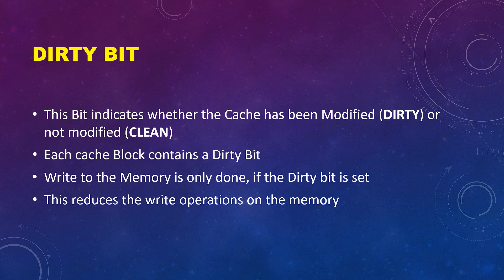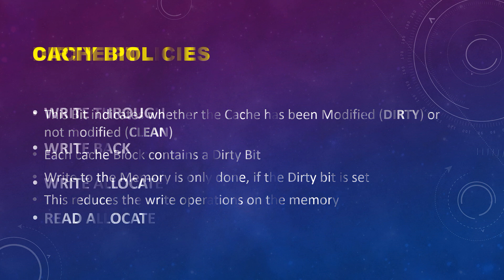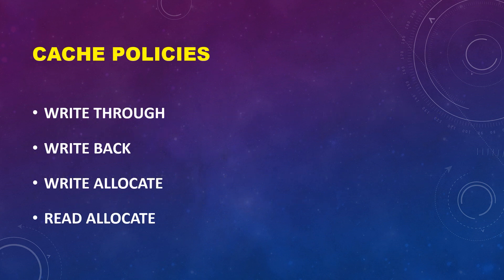Now let's talk about the cache policies in Cortex-M7 processors. There are four cache policies: write through, write back, write allocate, and read allocate.